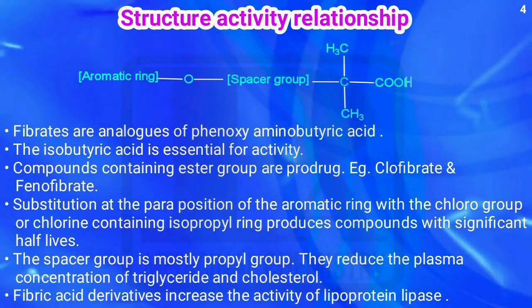Now we will see the SAR of fibric acid derivatives. This is the general structure. First, it should have an aromatic ring connected to oxygen. Next, it has a spacer group, and with that spacer group one carbon has two methyl groups attached, and that carbon is connected to an acid group — this is called isobutyric acid. So the general structure is phenoxy isobutyric acid. Isobutyric acid has four carbons, but with the same carbon having two methyls, that is called 'iso.'